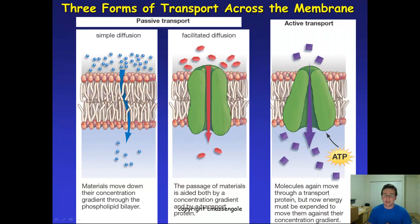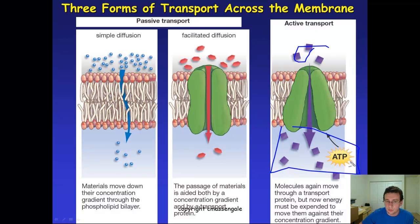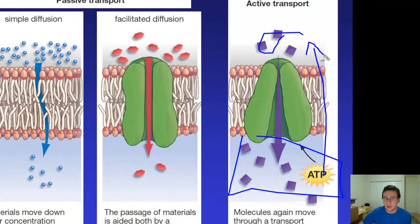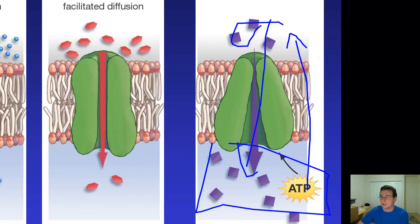Active transport is when energy is required to move something across the membrane. In the example shown, there are many more molecules on the inside than the outside. If things were moving by diffusion they would go outward, but active transport moves them against the concentration gradient — in the direction shown by the arrows — and that requires cellular energy, which is ATP.